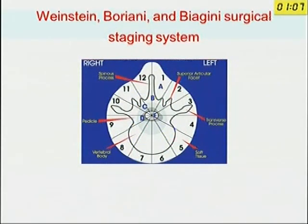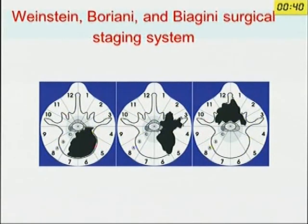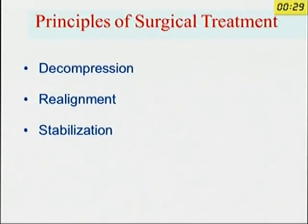The Weinstein-Boriani-Biagini (WBB) staging system divides the vertebra like a clock with twelve divisions. Depending on which quadrant the tumor is in, you can decide the surgical grade — there are seven types. If the tumor has no soft tissue extension, you can go for an en-bloc resection, which will enhance the longevity of the patient.